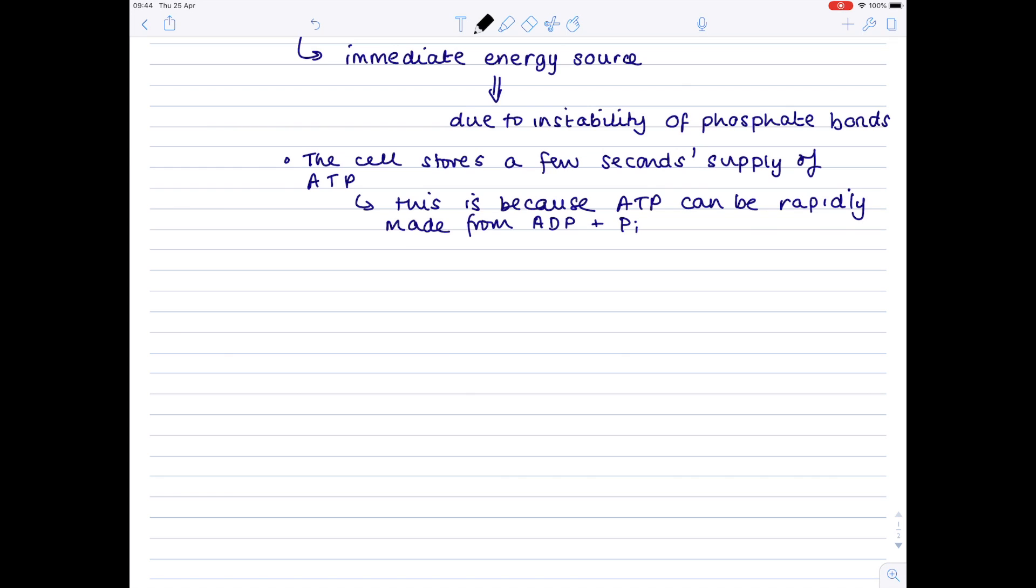Why do we prefer to use ATP as an immediate energy source compared with glucose? Well, the hydrolysis of ATP to ADP is a single reaction that releases immediate energy, whereas the breakdown of glucose is a long series of reactions and therefore, the energy release will be much slower.